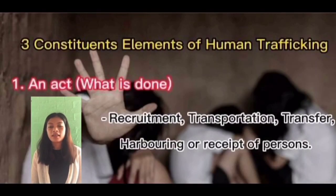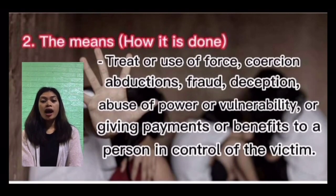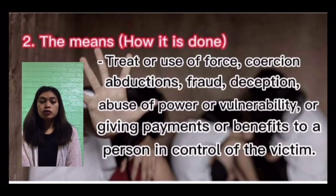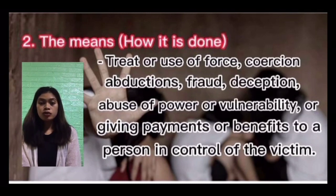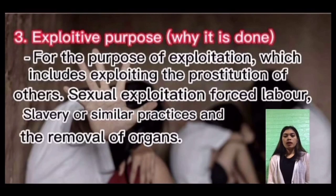Human trafficking has three key elements. The first is the act — what is done — which includes recruitment, transportation, transfer, harboring, or receipt of persons. The second is the means — how it is done — which includes threat or use of force, coercion, abduction, fraud, deception, abuse of power or vulnerability, or giving payments or benefits to a person in control of the victim.